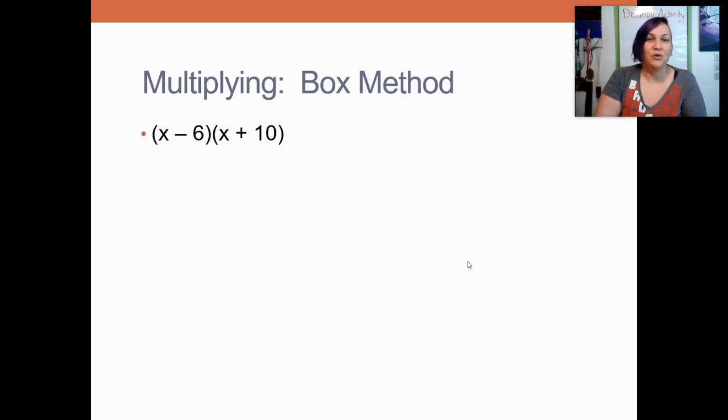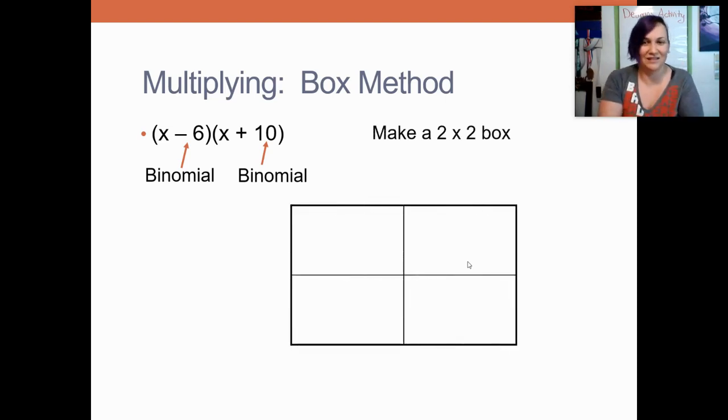As I said earlier, we have a binomial and we have another binomial. So we're going to take our box that we were using yesterday and we're just going to make it a different size. Since our first parentheses has two terms and our second parentheses also has two terms, we're going to draw a box that is two by two.